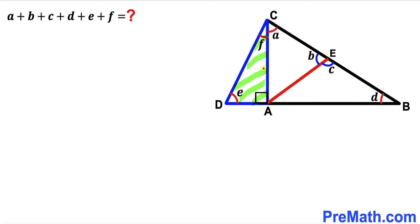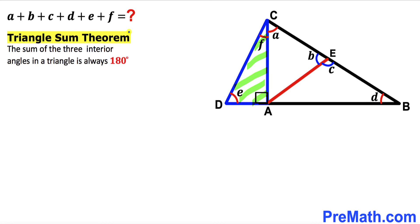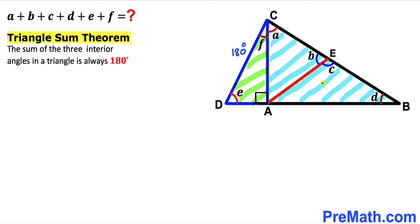Here's our very first step. Let's focus on right triangle ADC and recall the triangle sum theorem. According to this theorem, the sum of three interior angles in a triangle is always 180 degrees. So the sum of all three interior angles in triangle ADC must equal 180 degrees. Likewise, for right triangle ABC, the sum of all three interior angles must also equal 180 degrees.